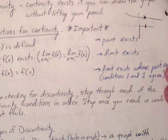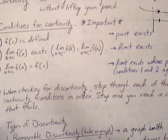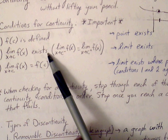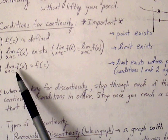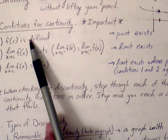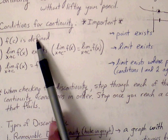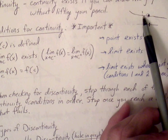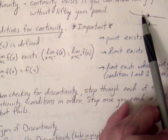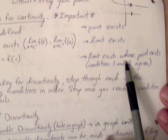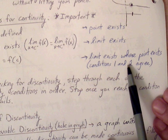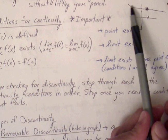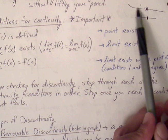The third condition asks whether the first two conditions agree — are they equal to each other? We found f of c and the limit value. If the ordered pair exists where the graph is connected and they agree, then the function is continuous at that point — we can sketch through it without lifting our pen.